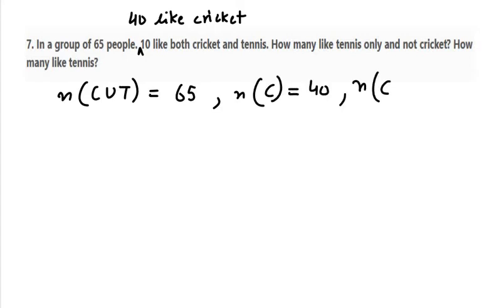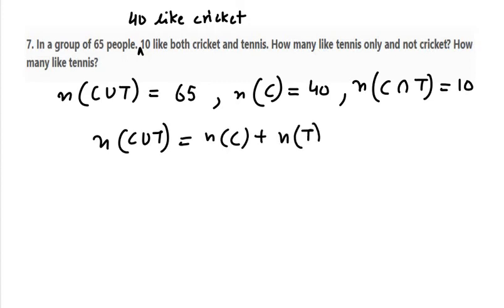In the third value, it says both like cricket as well as tennis, so N(C∩T) is 10. We have a formula for this: N(C∪T) equals N(C) plus N(T) take away N(C∩T).